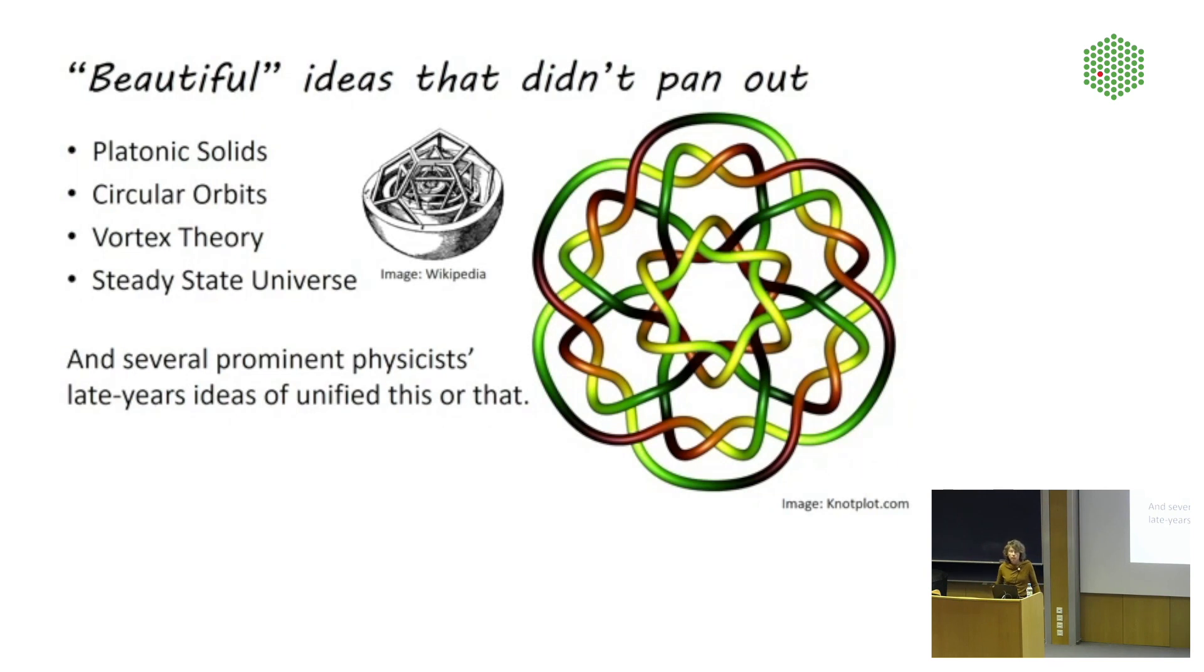So does it at least work to rely on beauty as a guide to the development of natural laws? The answer is no. There are a lot of examples in the history of physics where that has clearly not worked. Probably the best known example are the platonic solids that you see here. So this is a set of five regular polyhedra that according to Kepler should be stacked inside each other to determine the orbits of the then known five planets. So that was wrong to begin with because there are more than five planets and also the orbits are not circular.